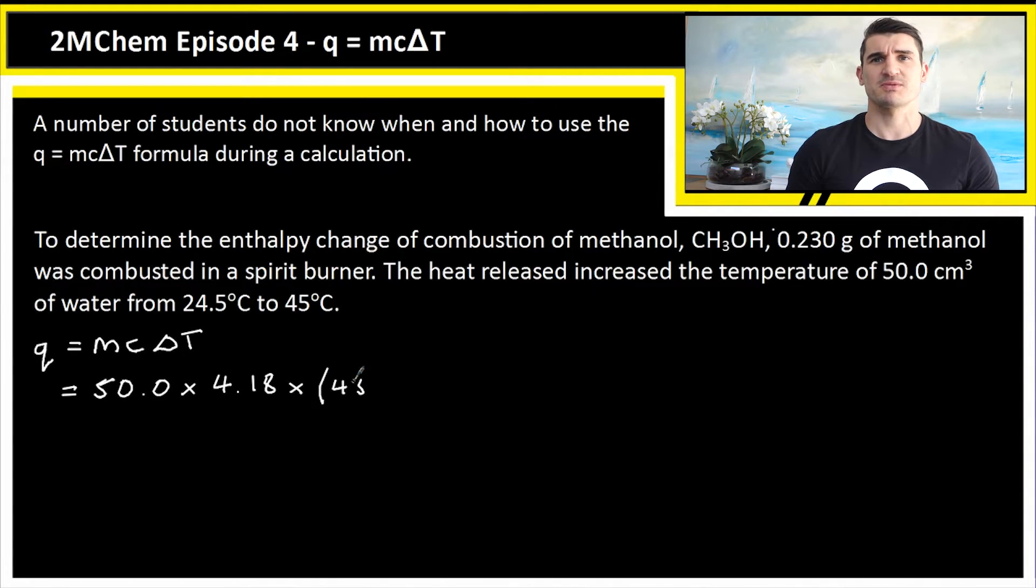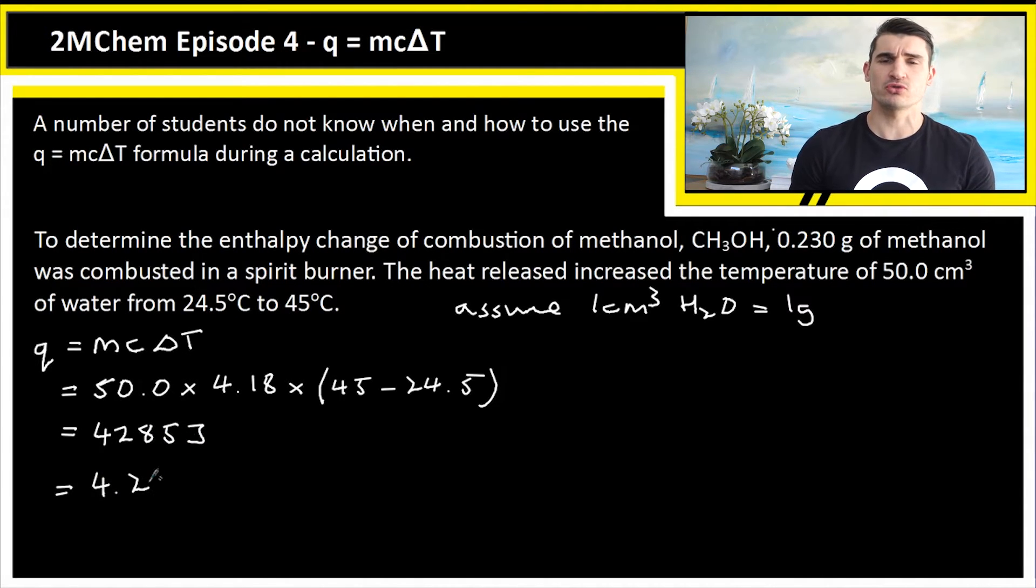We multiply that by the specific heat capacity of water and then multiply that by the temperature change, the difference between the temperatures. In this case it's a positive number. If it's a negative number, just use the difference, don't use the negative. Because what we're getting out here is an energy in joules. We can never have a negative energy, so here we've got 4.29 kilojoules. I've changed it to kilojoules because it's more usable, especially when we work out the delta H.